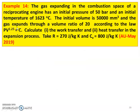The next problem: Example number 14 from May 2019 question paper. The gas expanding in a combustion space of a reciprocating engine has an initial pressure of 50 bar and initial temperature of 1623°C. The initial volume is 50,000 mm³ and the gas expands through a volume ratio of 20. According to the law PV^1.25 = constant, calculate the work transfer and heat transfer in the expansion process. Take R = 0.27 kJ/kg·K and CV = 0.8 kJ/kg·K.